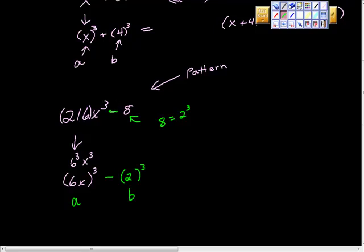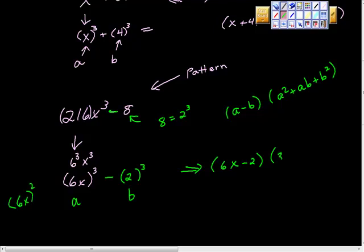Now I have my a value and my b value. This is a difference. The difference rule is (a - b)(a² + ab + b²). So we can apply that, and it will be (6x - 2) times a². So 6x squared equals 36x², because I'm going to distribute the exponent. 6² is 36, x² is x². And it's plus ab, so 6x times 2 is 12x. And then b² at the end is just 4.